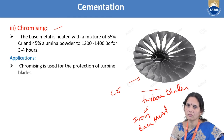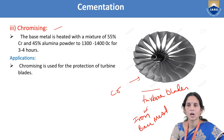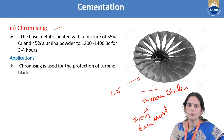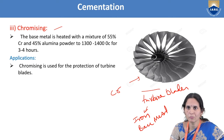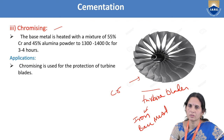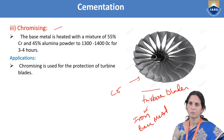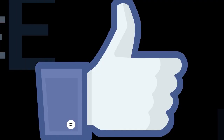To summarize the cementation process: sherrodizing gives a zinc coating on the surface of iron; colorizing gives an aluminum coating on the surface of iron; and chromizing gives a chromium coating on the surface of iron. Thank you — like, share, subscribe, and hit the bell icon for more updates.